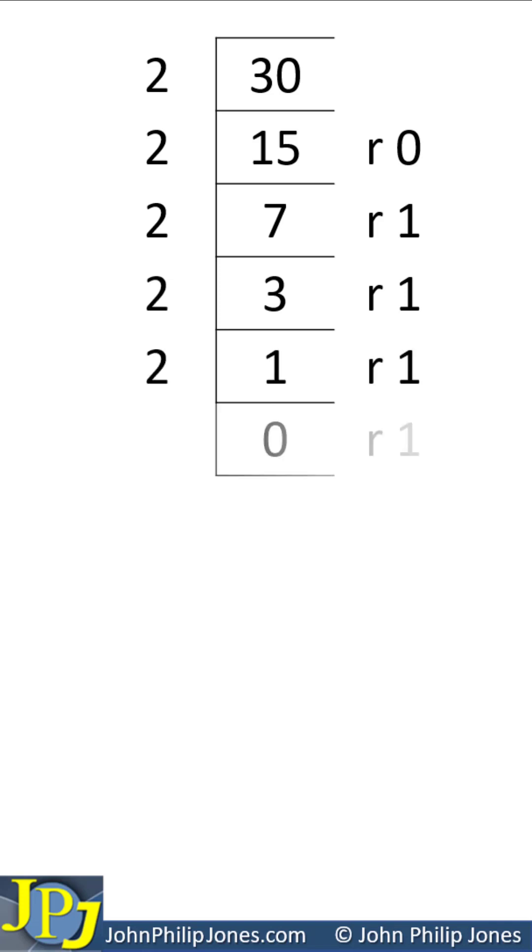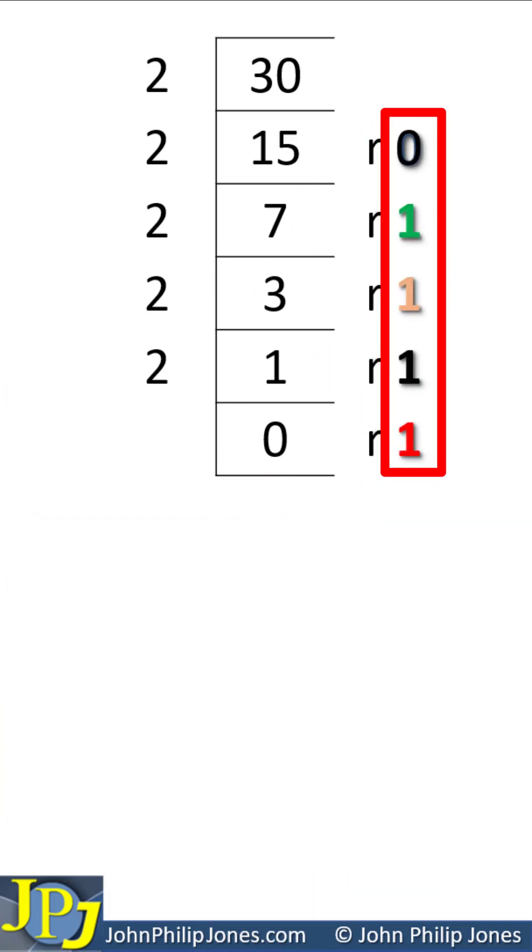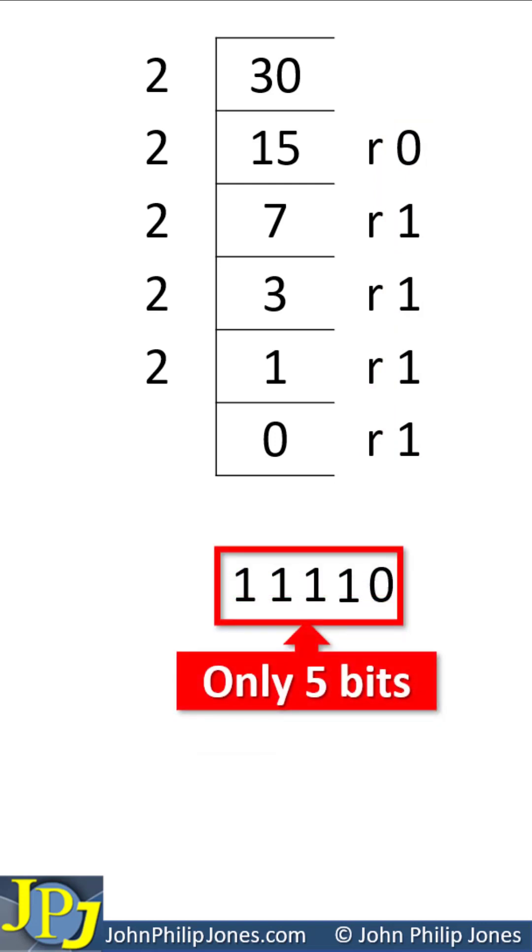And 2 into 1 doesn't go and you have a remainder of 1. You then take all of these bits and you write them down. And you can see that we only have here 5 bits.